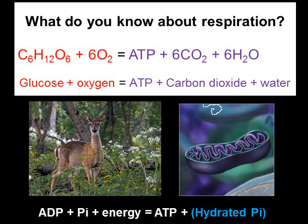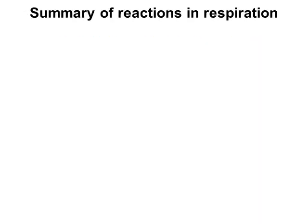You probably remember this from GCSE: we are taking glucose and oxygen and producing carbon dioxide and water, and in the process generating some energy which we're going to call ATP. That's the bottom equation — write that down.